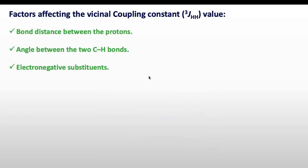We will discuss these factors — why geminal protons on saturated carbon have 10 to 16 Hz while on unsaturated carbon they have only 0 to 3 Hz. The factors affecting vicinal coupling constant (3J coupling) are: bond distance between the protons, angle between the two C-H bonds, and electronegative substituents.